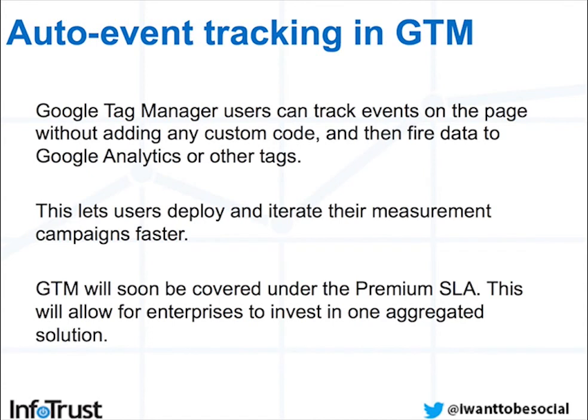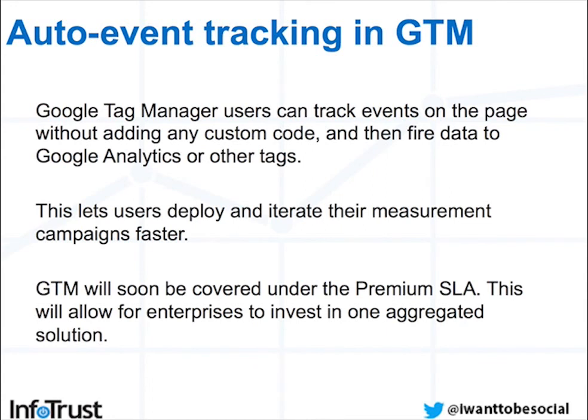Auto event tracking in Google Tag Manager allows marketers to track the things they want to track on their site without messing with the IT and development team. This allows users to deploy and iterate their measurement campaigns much faster because it puts the power back in the interface side. It also cleans up source code because you don't need as much custom JavaScript all over your site. And the best part is, Google Tag Manager will soon be covered under the Premium SLA.